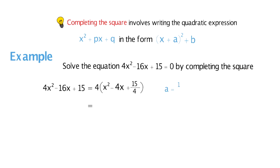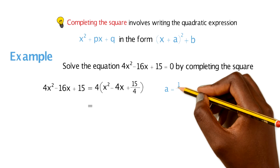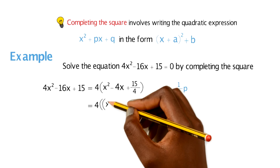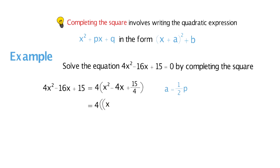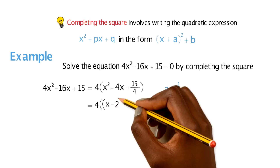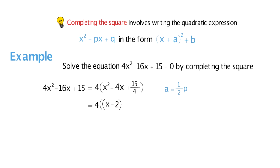Then we have a formula to work out our value of a, which is half of your p value. In this question our p value is minus 4, and half of minus 4 would be minus 2. So now we're going to rewrite all of this — we still have our 4 outside the brackets, and inside the completing the square bracket we have x minus 2, close bracket, squared.